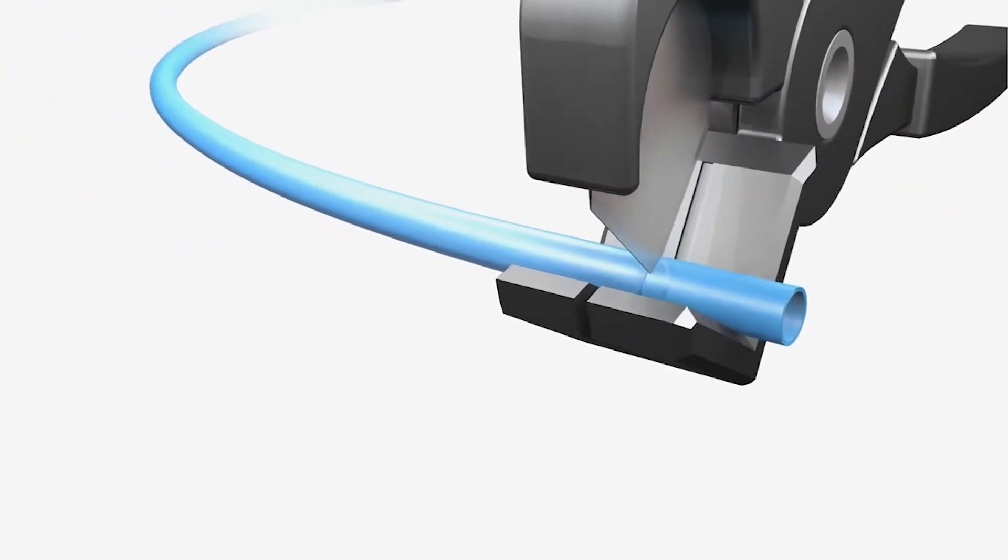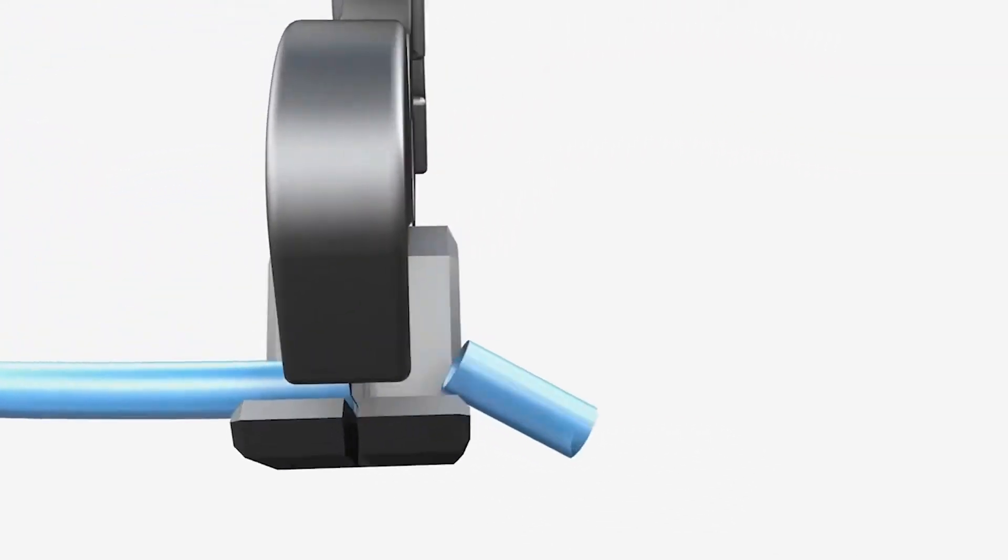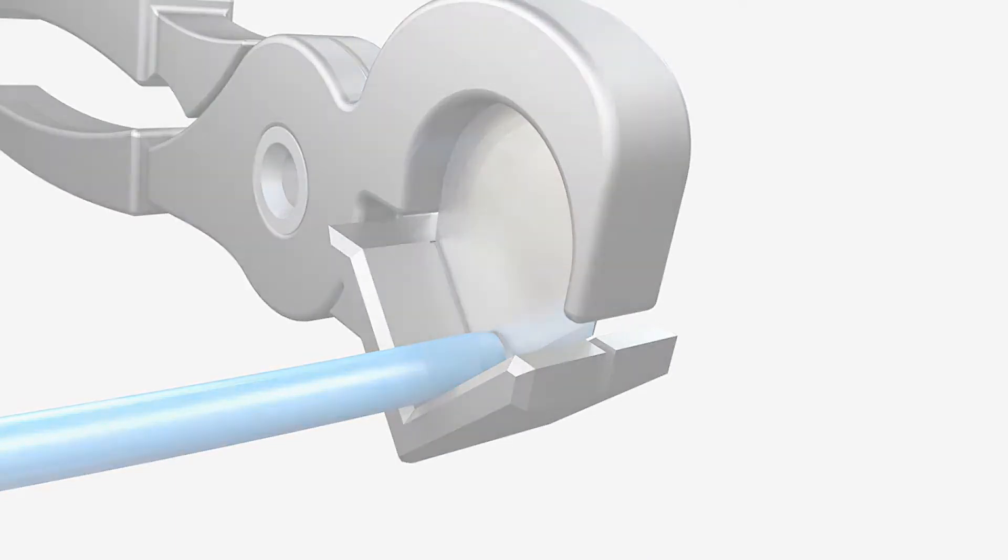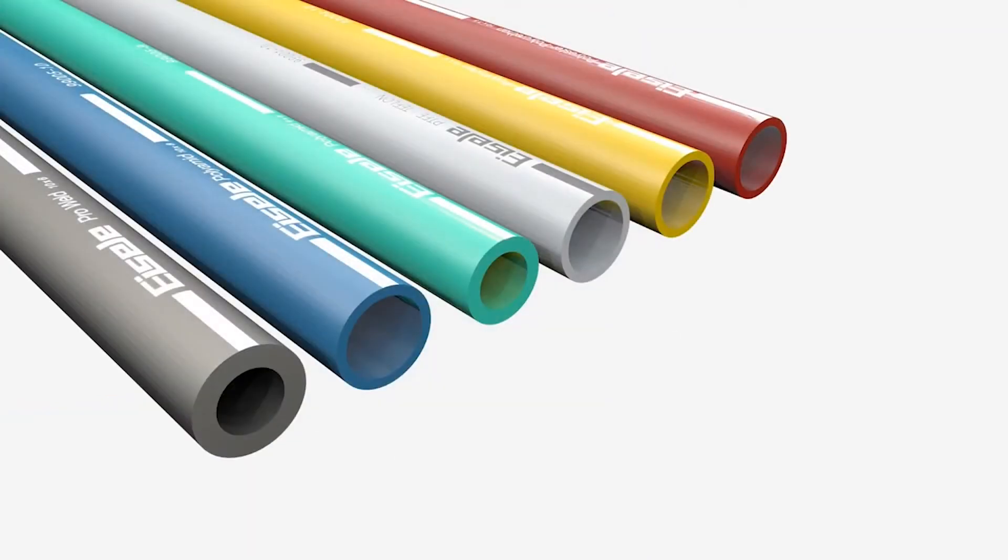Prior to assembly, cut the hose at a right angle with the original Eisele hose cutter. A hose end which is free from scoring and damage guarantees secure assembly.